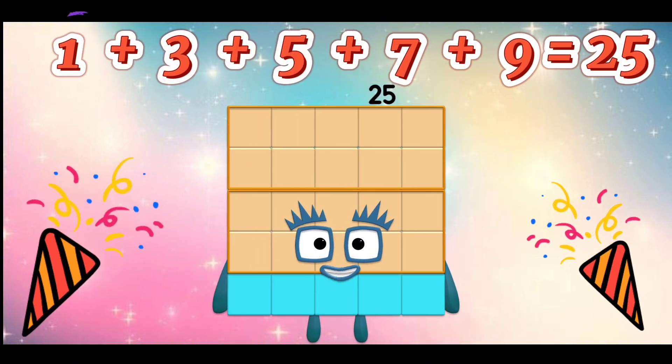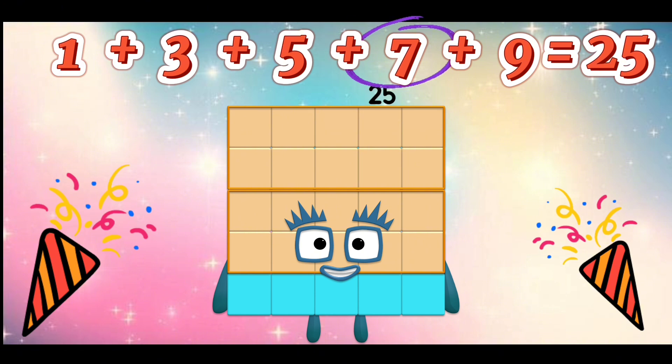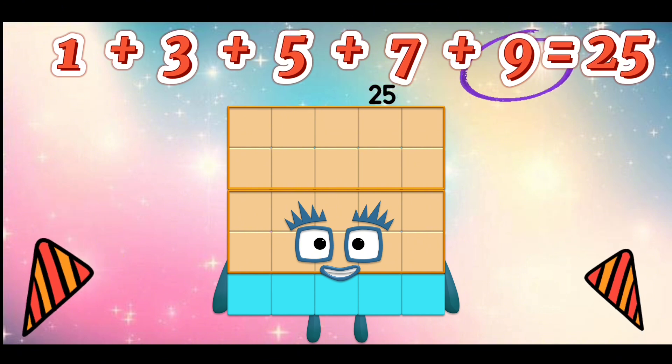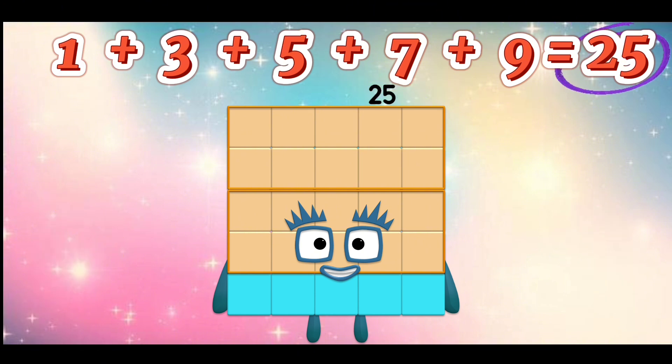Let's repeat. 1 plus 3 plus 5 plus 7 plus 9 is equal to 25.